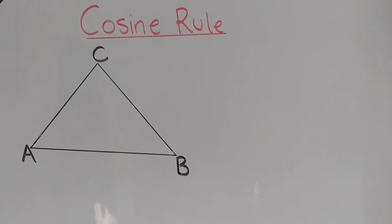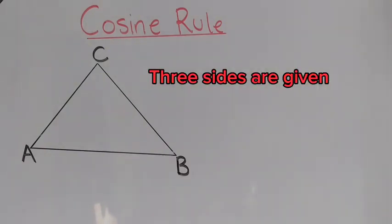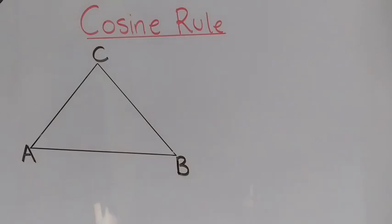When using the cosine rule, two sides and the included angle are given. Apart from that, three sides can be given. These are the most important concepts you must take note of when it comes to using the cosine rule.